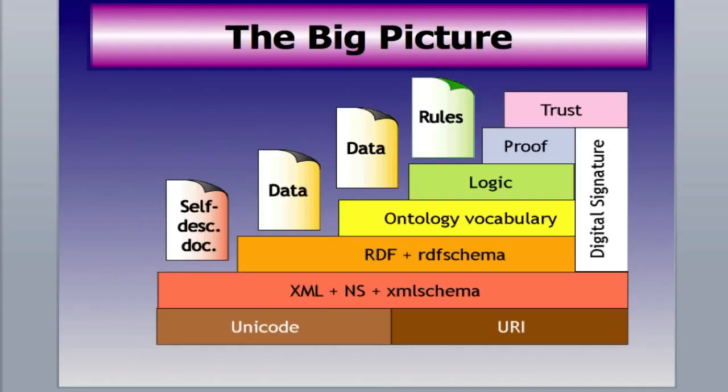Unicode gives a computer number to literally every character for every written language in the world. On top of that Unicode base and that naming convention is XML, and the schema is everything that goes with XML. XML is going to be the common language that connects everything together. Using XML, the semantic web will use RDF, which are triplets that connect different objects together — we'll cover that more in a little bit.